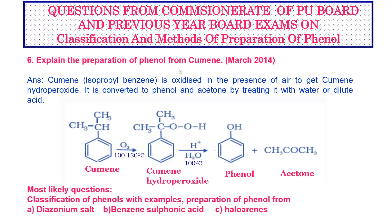Explain the preparation of phenol from cumene. This was a question asked in the March 2014 board examination. Cumene, which is chemically isopropyl benzene, is oxidized in presence of air at about 100 to 130 degrees Celsius to get cumene hydroperoxide. It is then converted into phenol and acetone by treating it with water or dilute acid at about 100 degrees Celsius.